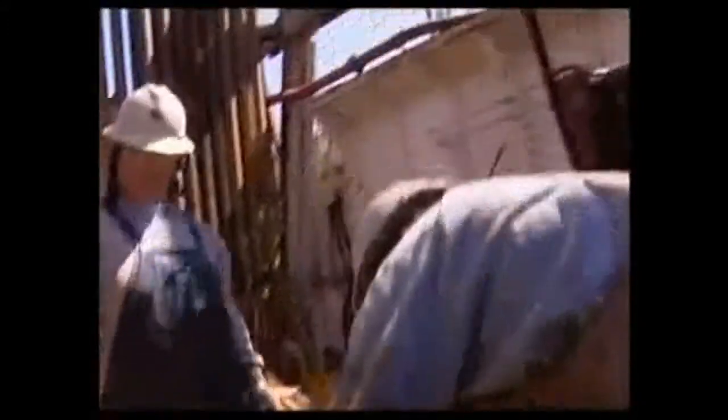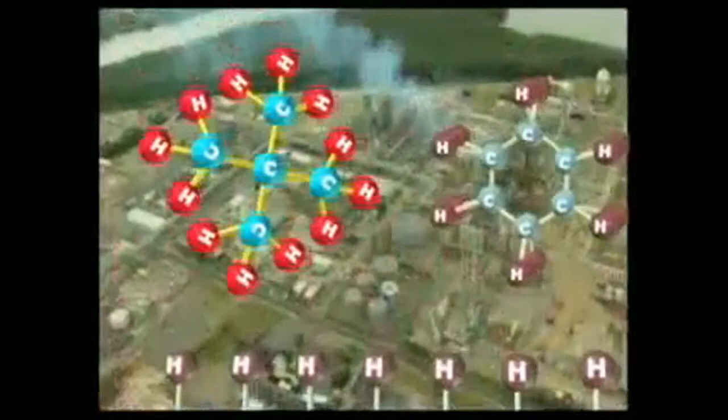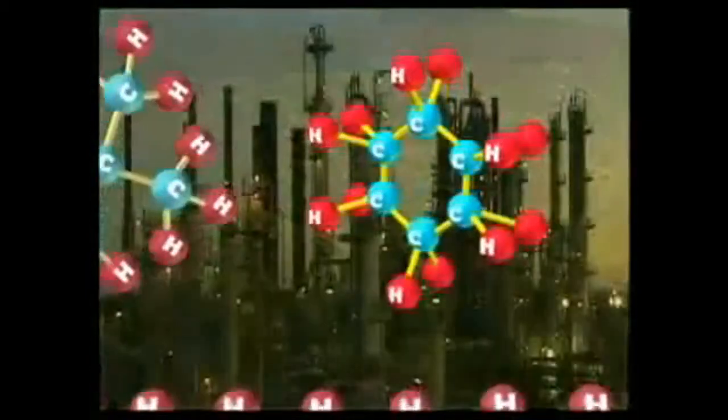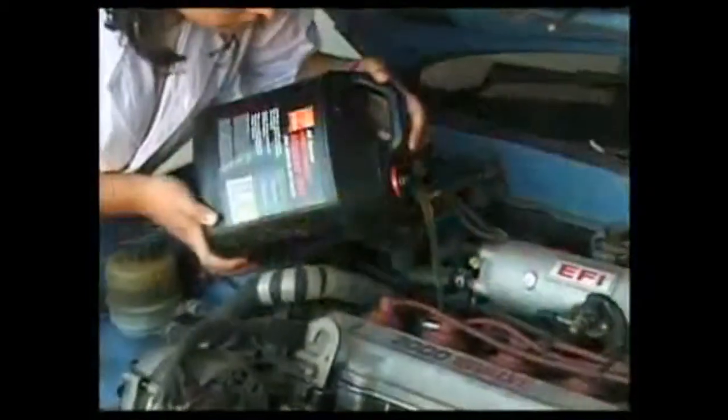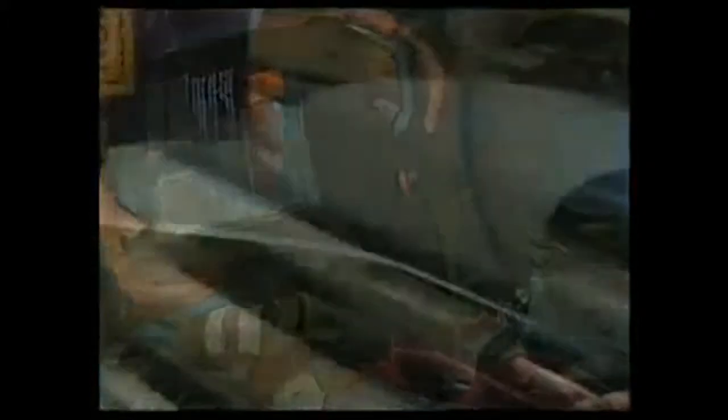Crude oil is distilled into its basic components. The longer carbon chain hydrocarbons may be cracked to become more valuable shorter chain hydrocarbons. And short chain molecules can bind to form useful longer chain molecules.